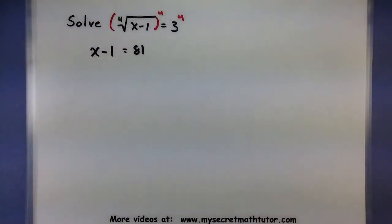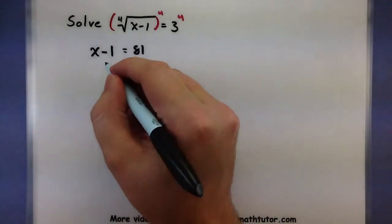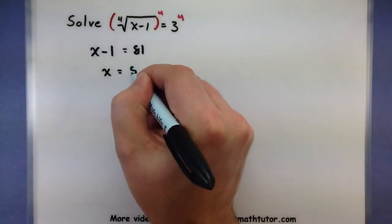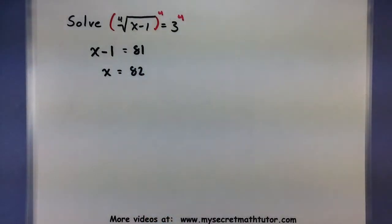Okay, so a much better equation that I'd rather solve this one instead. Let's add 1 to both sides. And we'll get x is equal to 82. So it looks like that's going to be our solution.